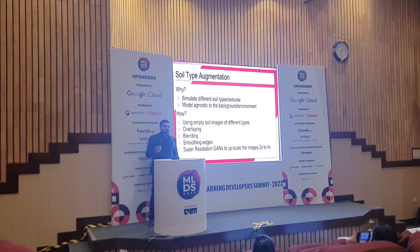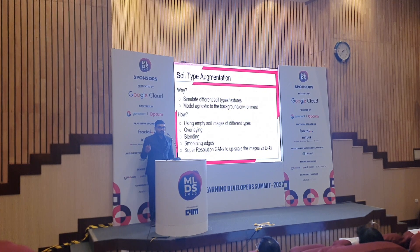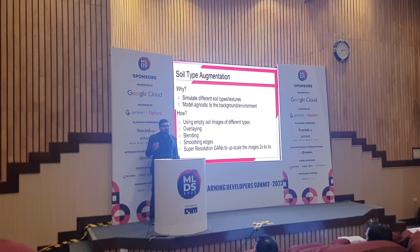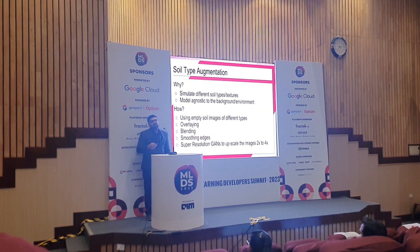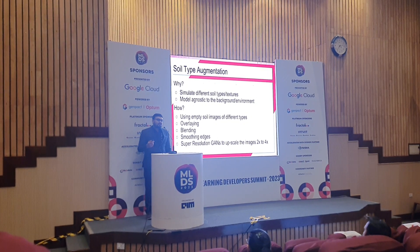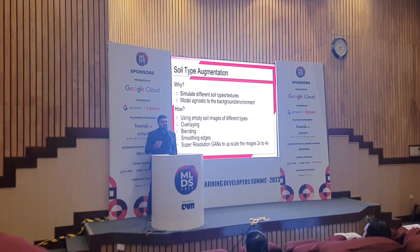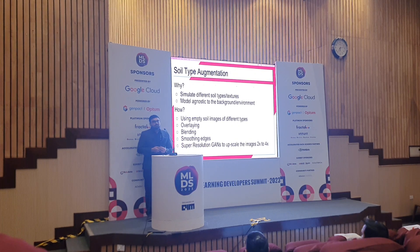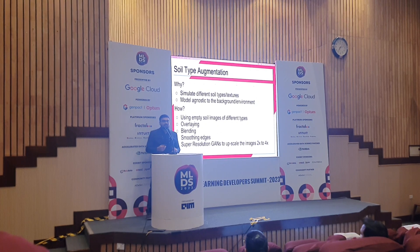The fourth approach is soil type augmentation. The public data lacked diversity in different soil types and textures - it was very constant with only one type of soil. However, in real-time data we had all sorts of soil types and textures. Analysis of the sugar beet data showed crops grown in black soil, cinder soil, and laterite soil, among others. The idea was to simulate different soil types and textures and make the model agnostic to the environment and background.